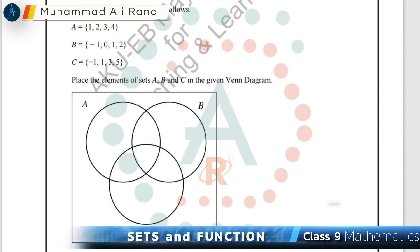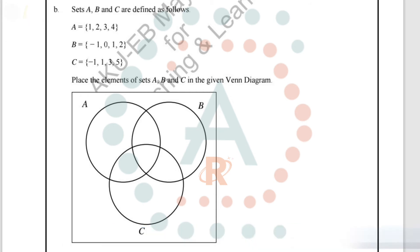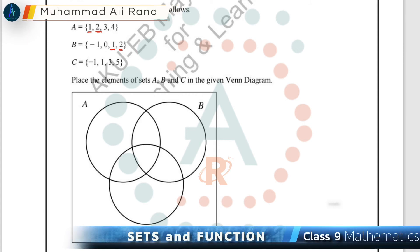Now for Part B, we have sets A = {1, 2, 3, 4}, B = {-1, 0, 1, 2}, and C = {-1, 1, 3, 5}. We have to place the elements in a Venn diagram. These three sets are overlapping sets. The element 1 appears in all three sets, so it goes in the central region where all three circles overlap.